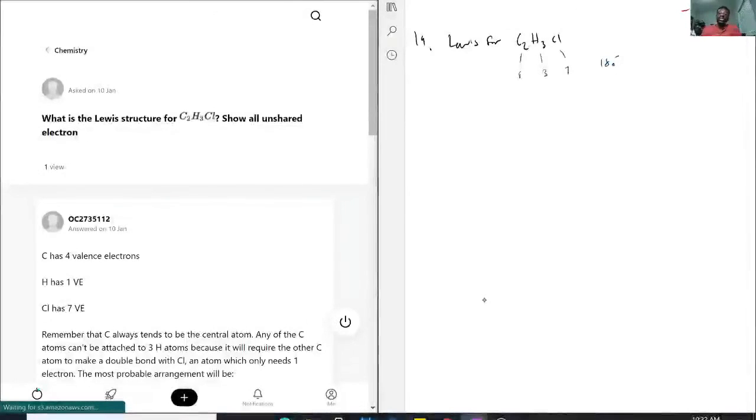And now let's draw it out. So carbon, considering that it has the most unpaired electrons, those two will go in the middle. So we have C, C, then we have H, H, H, H, Cl.